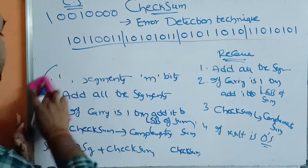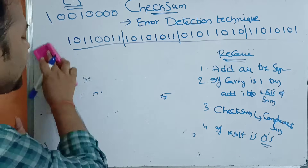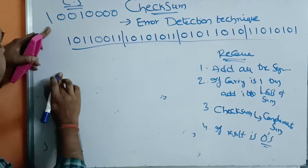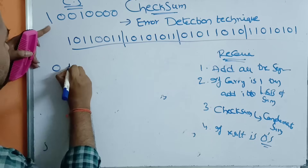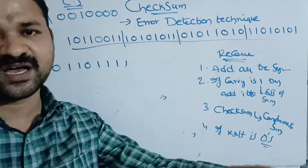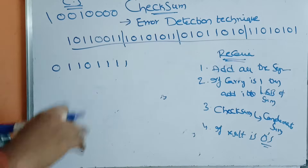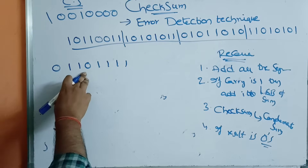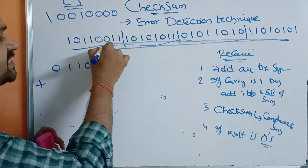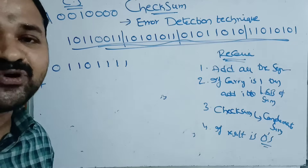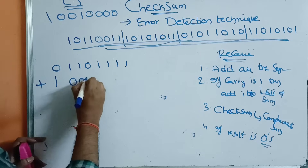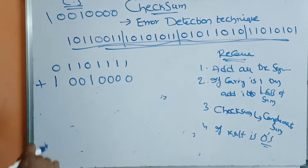We already added the 4 message segments and got the sum as 01100110. Now we add the 5th segment — the checksum, which is 11001101 followed by four 0s — to this sum. After performing the addition, all bit positions produce 1s.